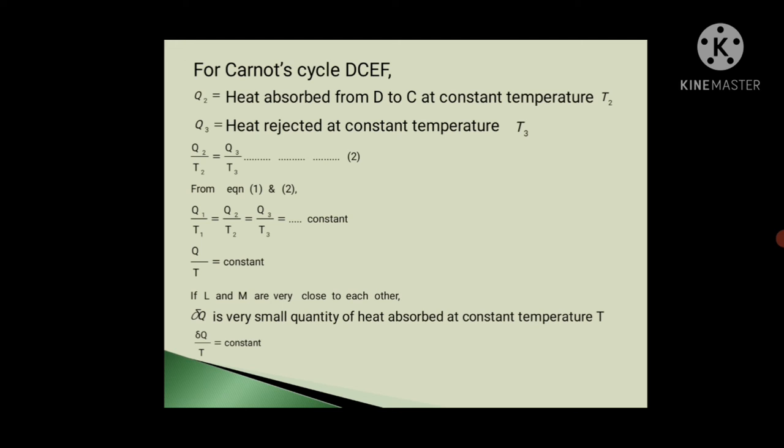So we can say Q2 upon T2 equals Q3 upon T3. Now friends, here Q2 amount of heat is absorbed by the working substance at constant temperature T2 and Q3 is rejected heat to the sink at constant temperature T3. So Q2 upon T2 equals Q3 upon T3, equation second.